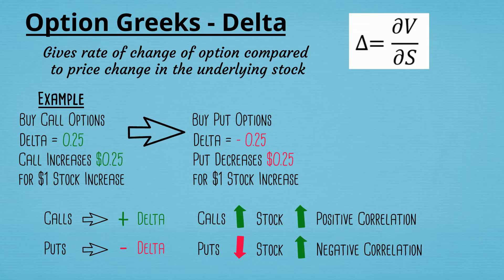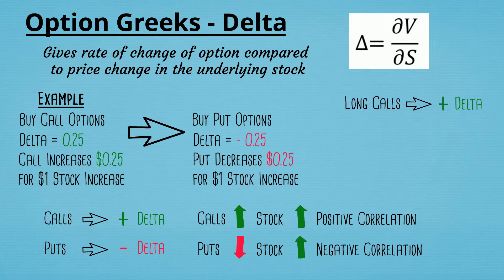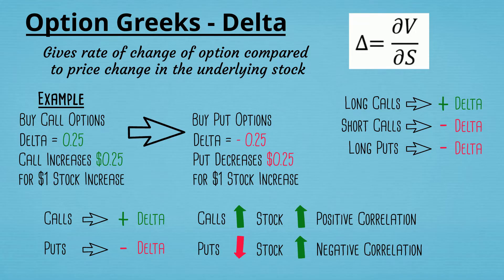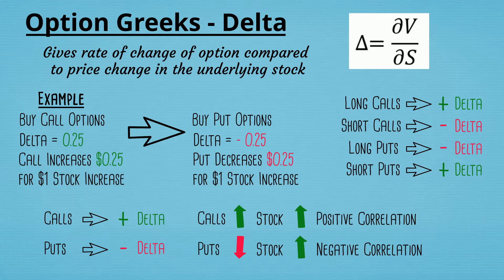Just keep it in mind this way: if you're long calls you have a positive Delta; if you're short calls that gives you a negative Delta. Conversely, if you're long puts you get a negative Delta, and if you're short puts you get a positive Delta.